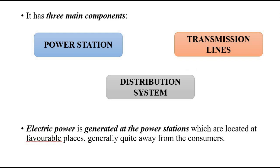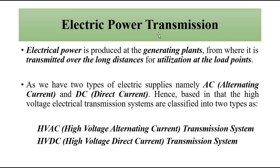The distribution system has primary and secondary distribution depending on the magnitude of voltage required, and step-up and step-down transformers are used at different points accordingly. When it comes to the transmission portion, there are two types of supply and transmission systems: first, the alternating current (AC) type, and then the direct current (DC) type. Alternating current is one which varies in magnitude and changes its direction periodically with respect to time, represented by a sinusoidal equation.